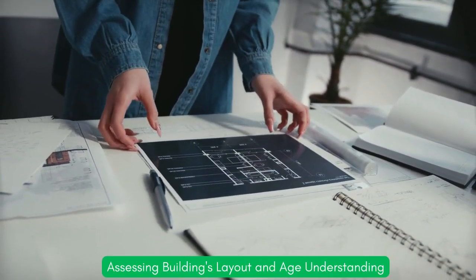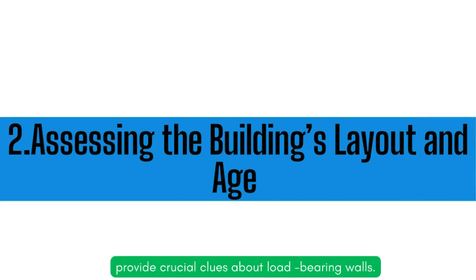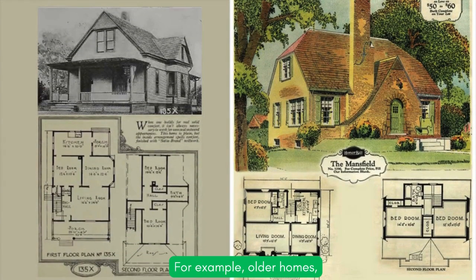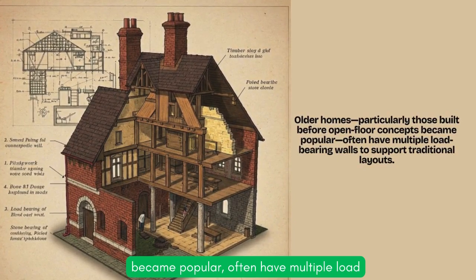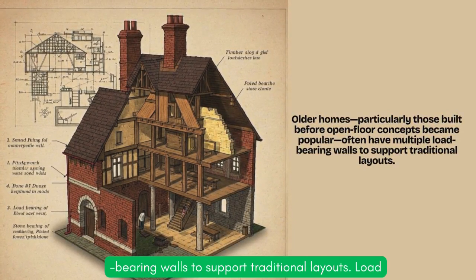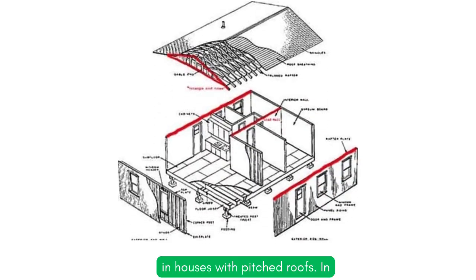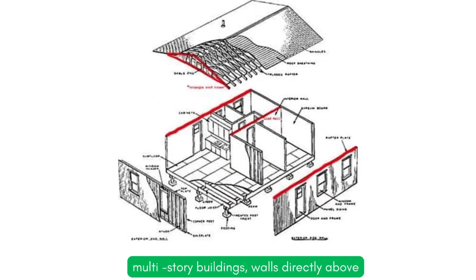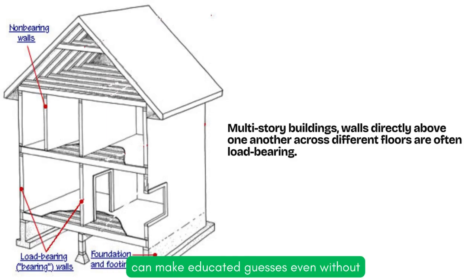Assessing the building's layout and age: understanding the construction era and layout of a building can provide crucial clues about load-bearing walls. For example, older homes, particularly those built before open floor concepts became popular, often have multiple load-bearing walls to support traditional layouts. Load-bearing walls typically run parallel to the roof ridge in houses with pitched roofs. In multi-story buildings, walls directly above one another across different floors are often load-bearing. By considering these factors, engineers can make educated guesses even without original plans.